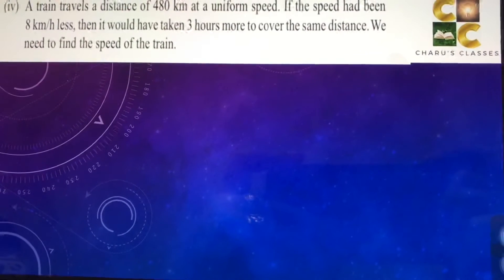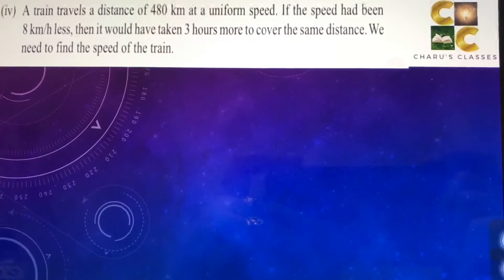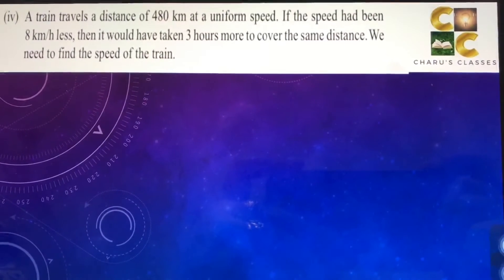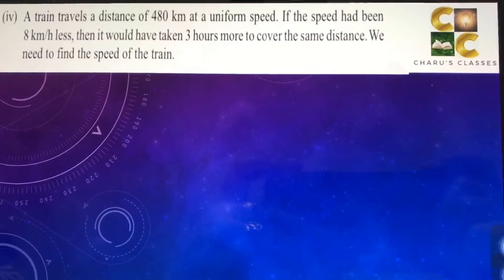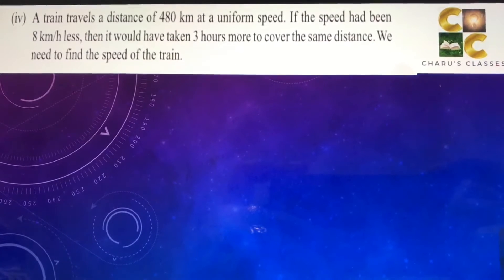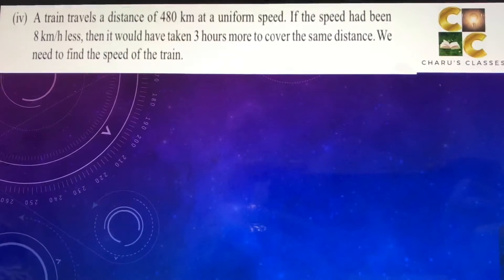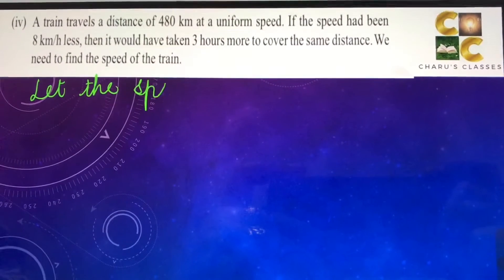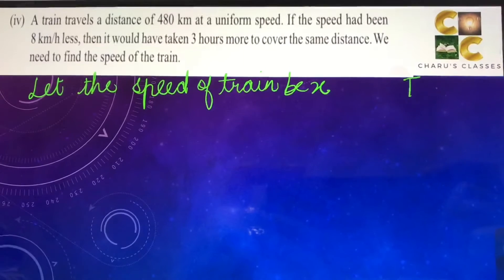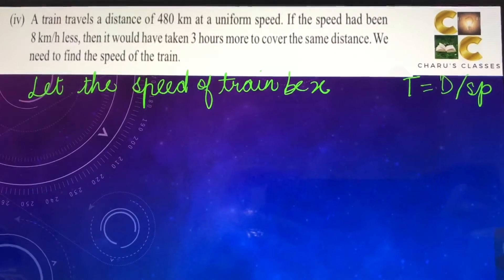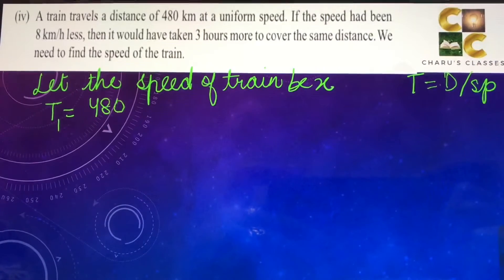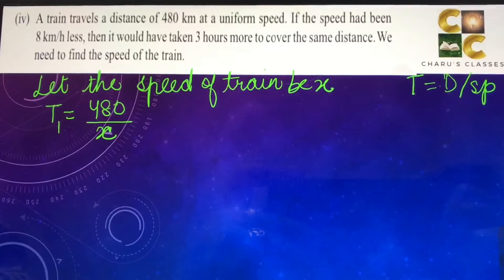Fourth question: A train travels a distance of 480 km at a uniform speed. If the speed had been 8 km/h less, it would have taken 3 hours more to cover the same distance. We need to find the speed of the train. As we know, speed = distance / time. Let the speed of the train be x. Then the initial time t1 = 480 / x.